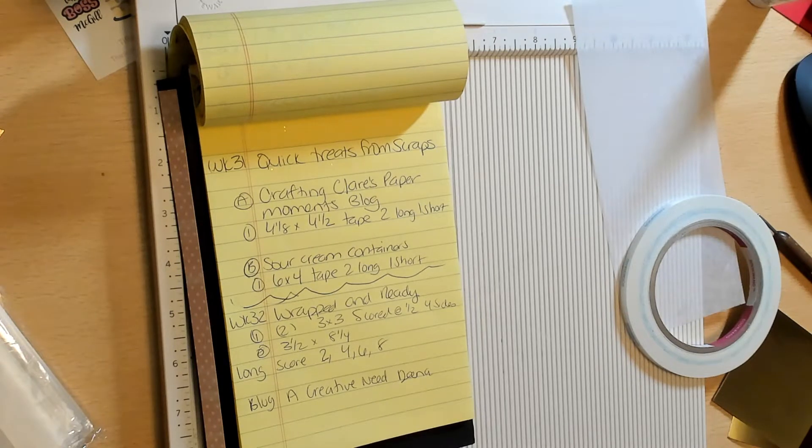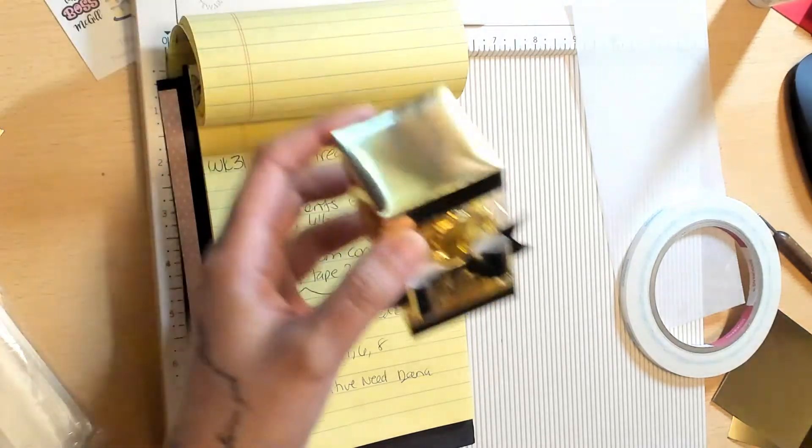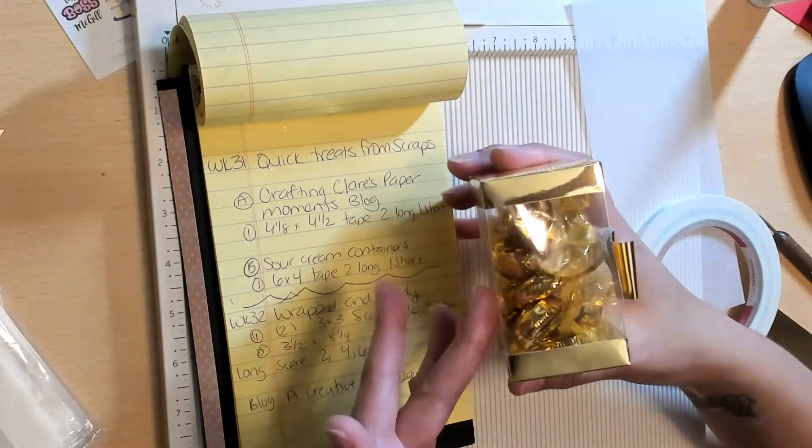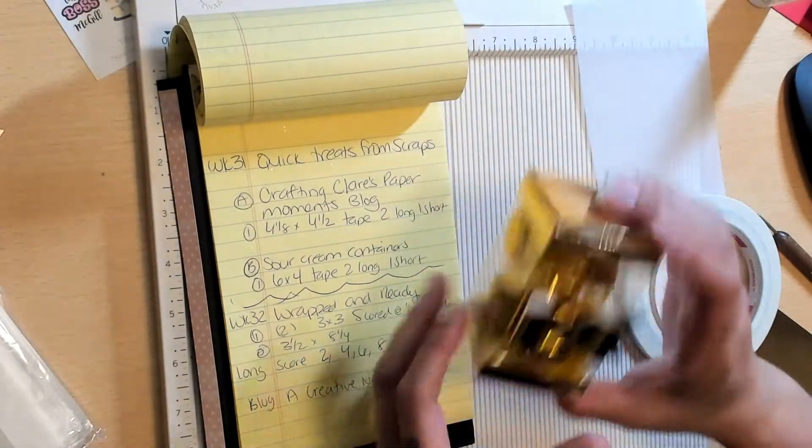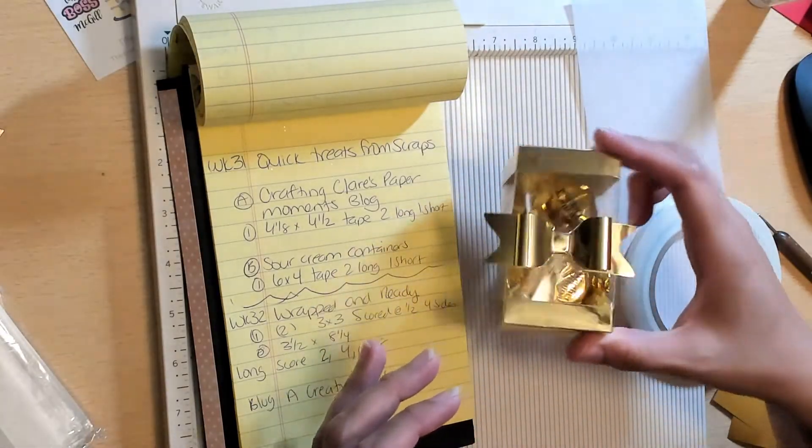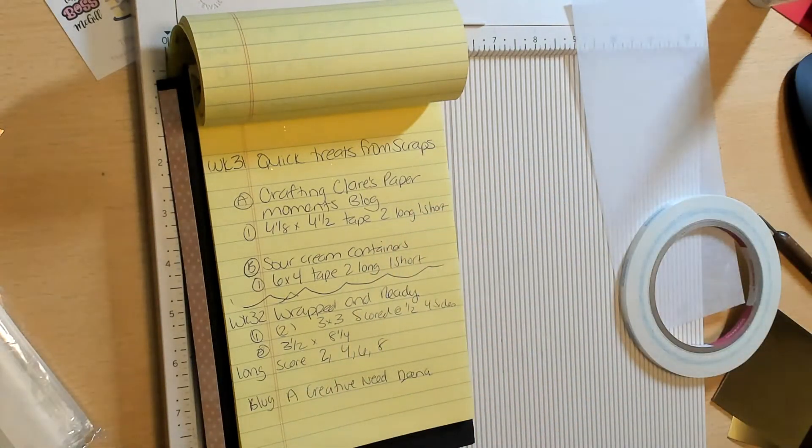It is this super cute acetate box. I did mine all gold and I filled it with some Werther's Originals. How beautiful would that be on a golden cream table for like Christmas setting or wedding or whatever?